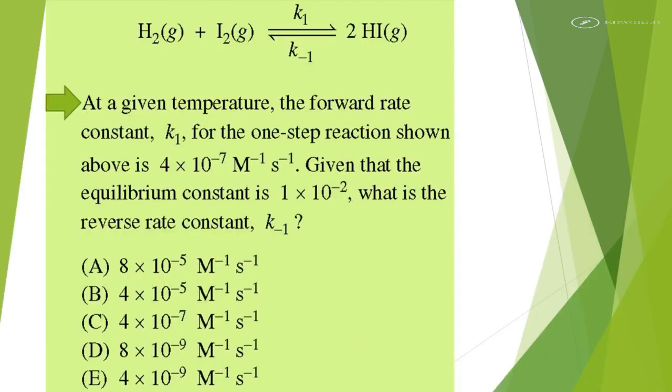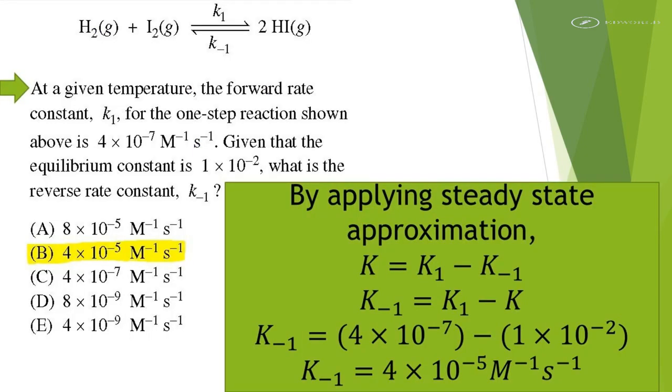At a given temperature, the forward rate constant K1 for the one-step reaction shown above is 4 times 10 to the power minus 7 per molar per second. Given that the equilibrium constant is 1 times 10 to the power minus 2, what is the reverse rate constant K? By applying steady state approximation, answer is option B.